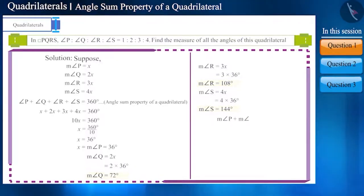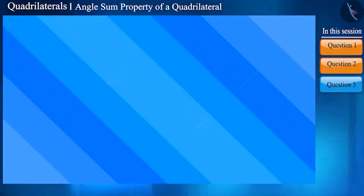The measurement of angle P, angle Q, angle R and angle S will be 36, 72, 108 and 144 degrees respectively. You can add all these angles and see that their sum will be 360 degrees. Let us see another similar question.